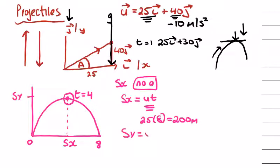And the displacement in the y direction: ut plus a half a t squared. You can see I write it every time. It's going to be 40 times 4 because we're looking for max height up here, so this is the max height, and then minus - if you want to put it in here we can change half a to minus 5 times t squared.